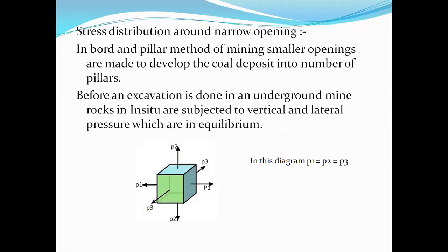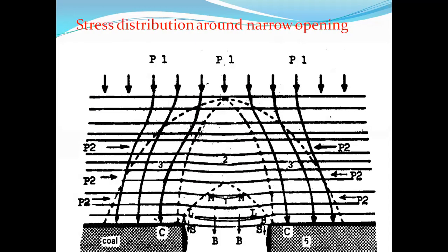Looking at the diagram of stress distribution around a narrow opening: before making any opening, in in-situ conditions, the stresses acting in a 3D block of rock mass are in equilibrium. There are three different forces P1, P2, P3 acting on this block of rock mass, and before making the opening they are in equilibrium — there is no problem because the in-situ stress is present as it is.